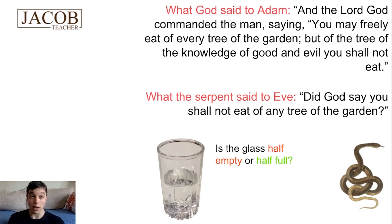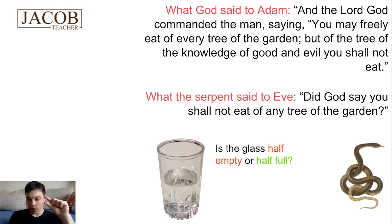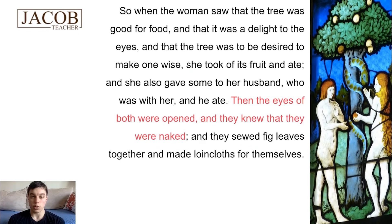Now let's go back to Adam and Eve. They are in paradise — for them the glass is like 99.9% full. And what the serpent does is basically say to Eve, 'Hey, look at that little bit that you don't have though. Look at that empty section of the glass, look at what you could have.' And that's how he tempts Eve. So when the woman saw that the tree was good for food, a delight to the eyes, and desired to make one wise, she took of its fruit and ate. She also gave some to her husband, who was with her, and he ate.